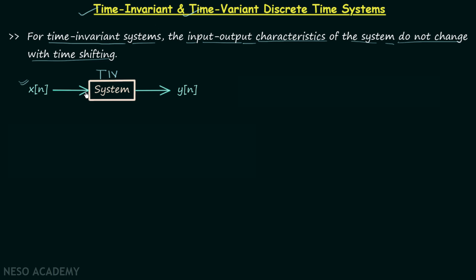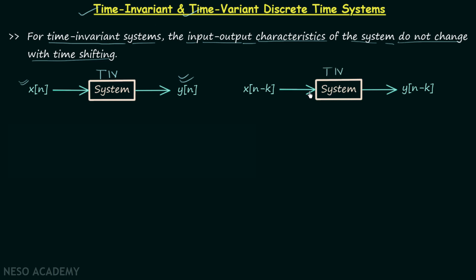For example, we have X[n] as the input to the time invariant system and for this input we are getting output Y[n]. Now in the next case, we take the same time invariant system but with input X[n−K], meaning there is a time delay by K. In this scenario, according to the rule, the output should be delayed by the same amount, giving us Y[n−K].